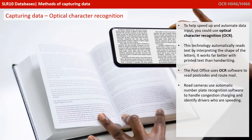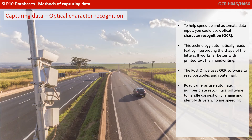To help speed up and automate data input, you could use Optical Character Recognition, or OCR. This technology automatically reads text by interpreting the shape of the letters. It works far better with printed text than handwriting. The post office uses OCR software to read postcodes and route mail, and road cameras use a form of this — Automatic Number Plate Recognition — to handle congestion charging and identify speeding drivers.